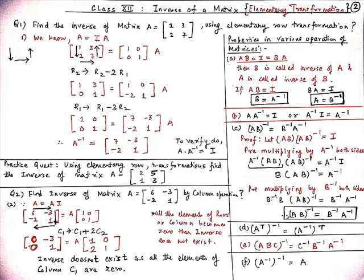Our third property is that (AB) whole inverse is equal to B inverse A inverse. Let us see its proof. Since we know that A dot A inverse equals I, we can write AB into (AB) whole inverse equal to I.